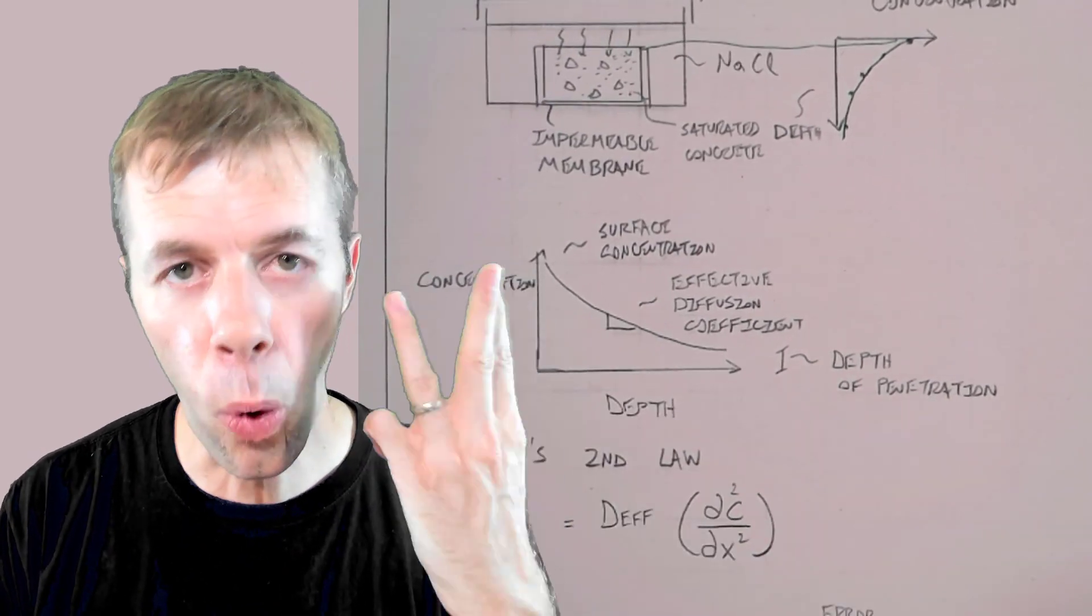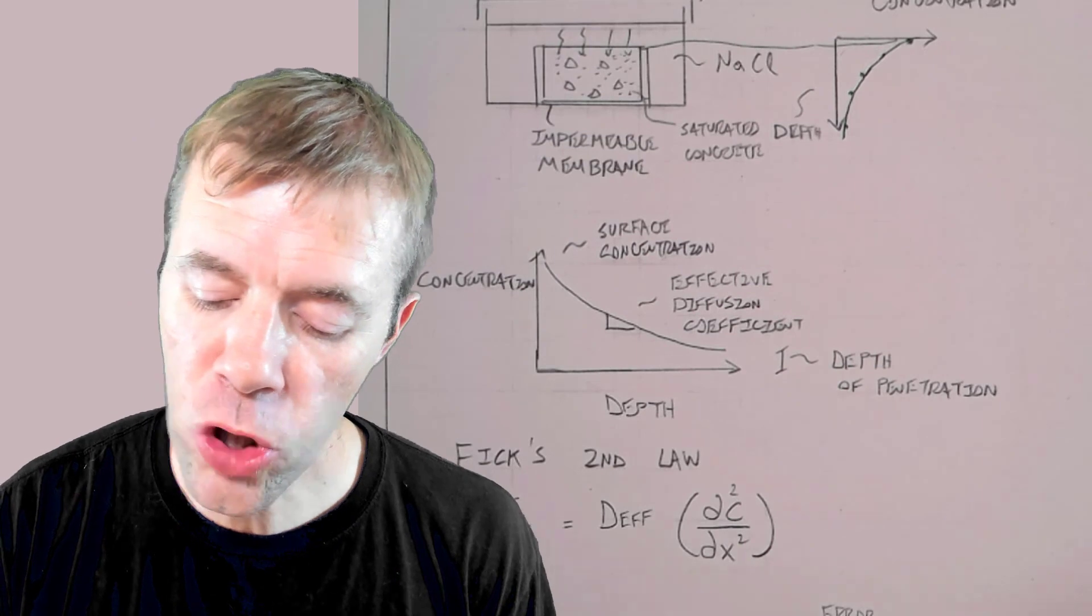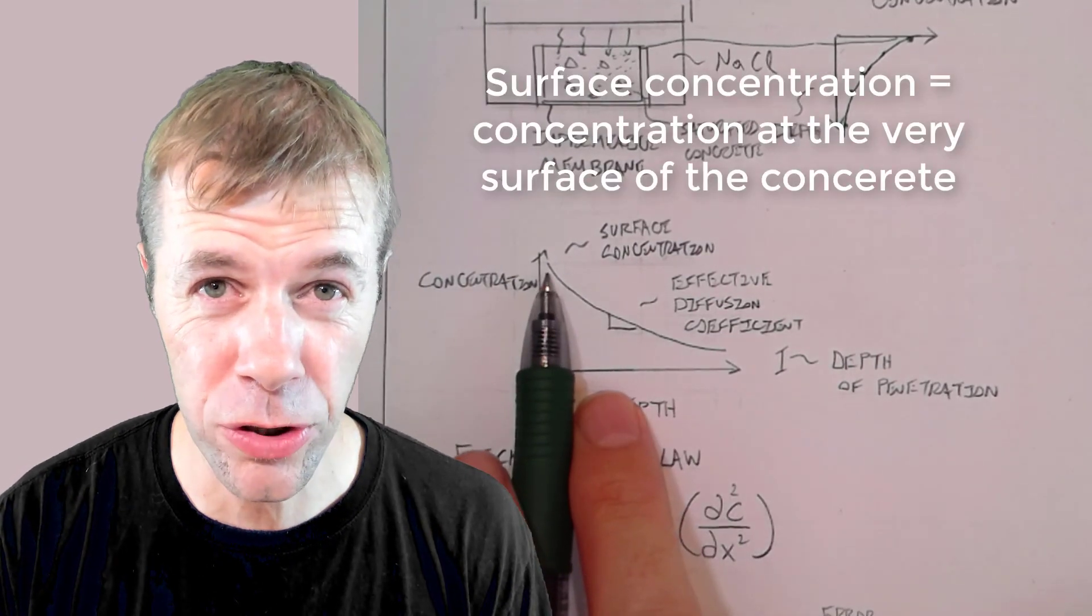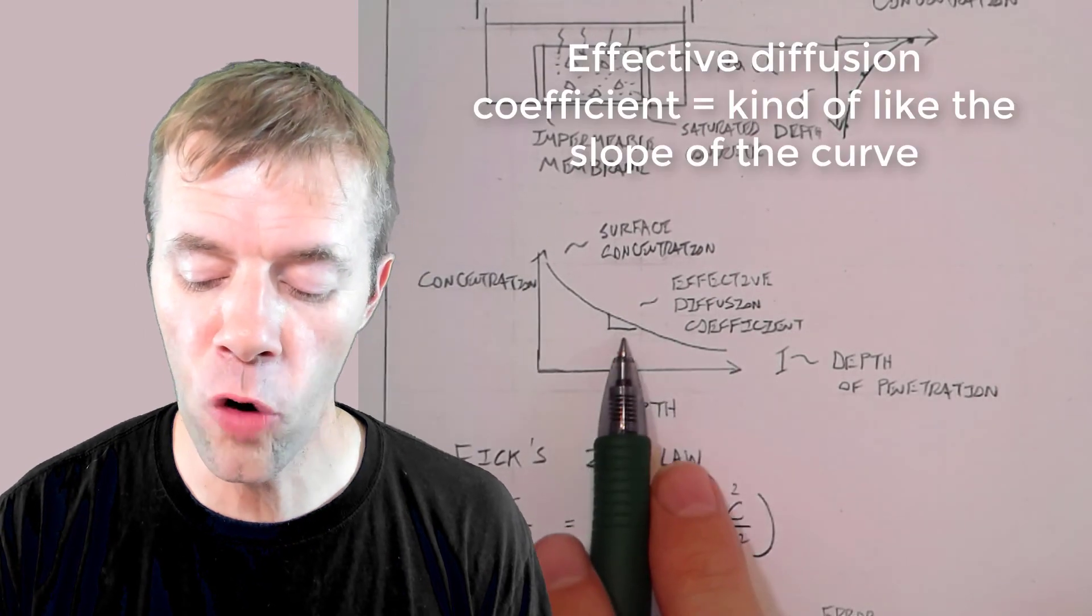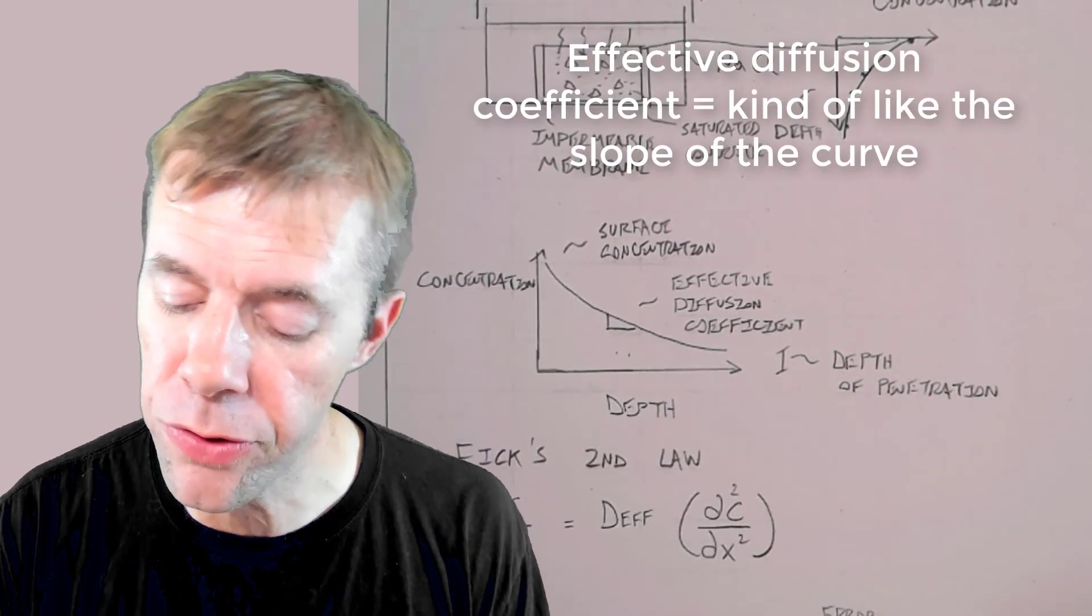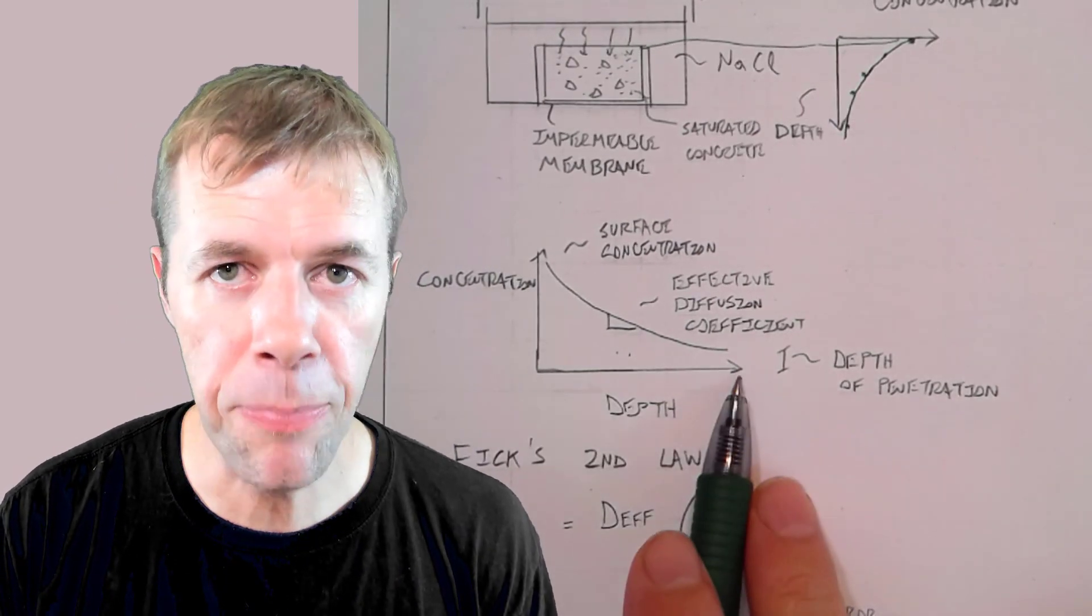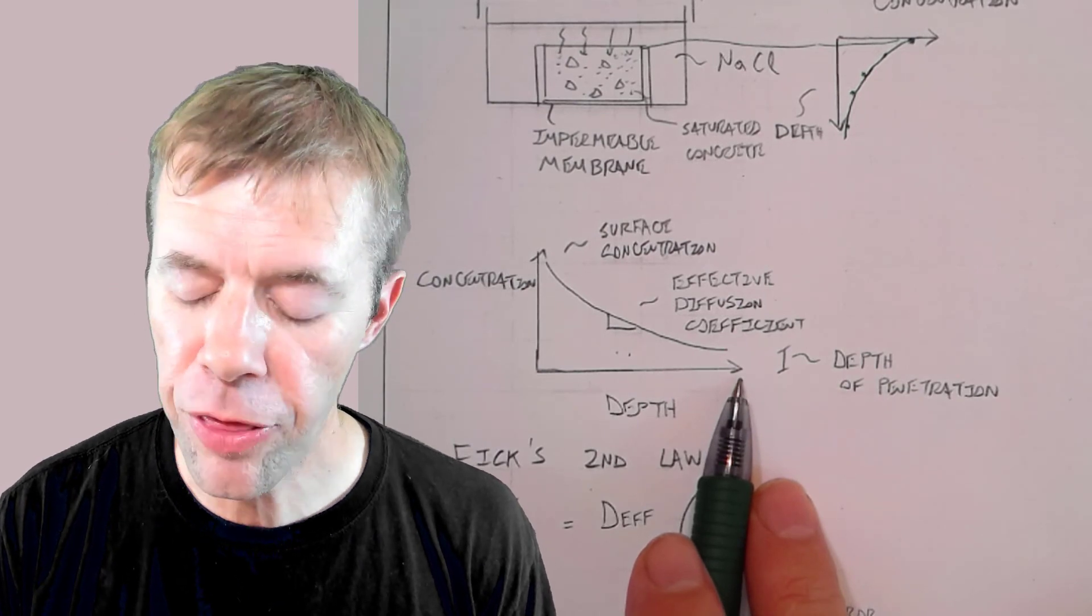And there are three important terms here. There's the surface concentration. That's how much concentration is at the very, very surface of the concrete. There's the effective diffusion coefficient, which is kind of like the slope of this line. And then there's something called the depth of penetration down here at the bottom.